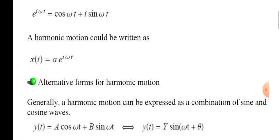Alternative forms of harmonic motion. Generally, harmonic motion can be expressed as a combination of sine and cosine waves. Y of t equals A cos omega t plus B sin omega t, or Y of t equals Y sin omega t plus theta.